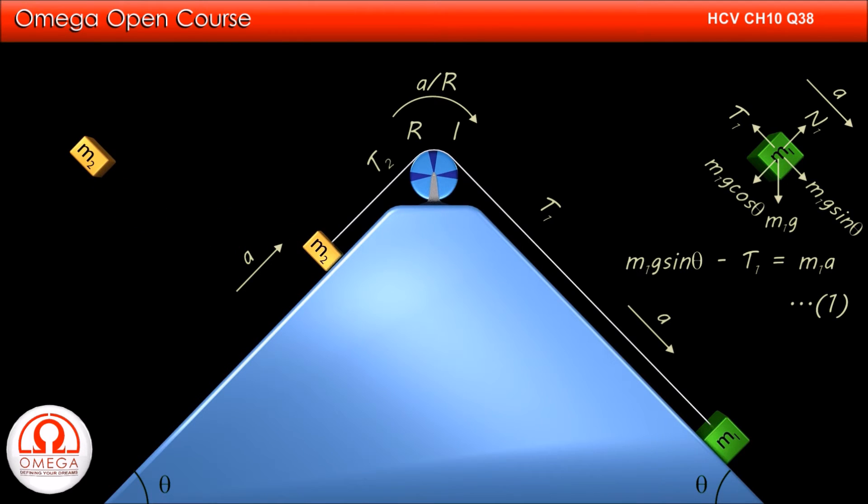In the free body diagram of the 2 kg block, gravitational force of M2g acts in vertically downward direction whose component along the incline is M2g sin theta and perpendicular to the incline is M2g cos theta.